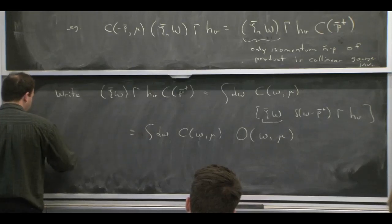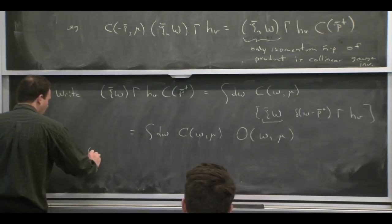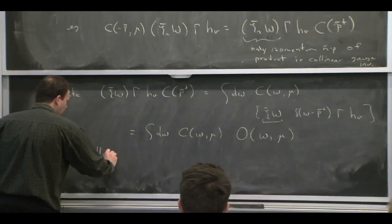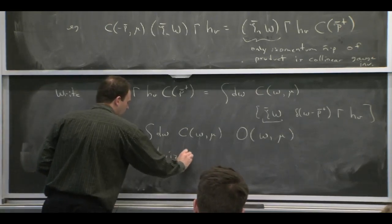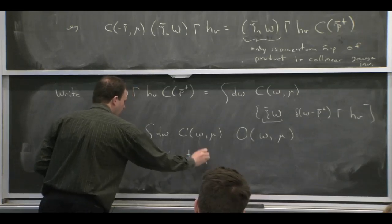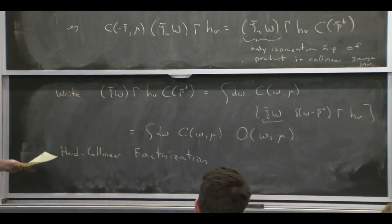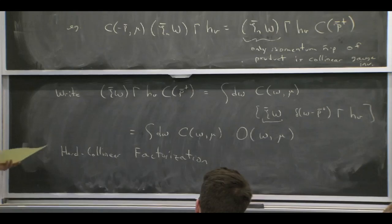So this here is what's called hard collinear factorization in the traditional QCD literature. Because it's telling you how hard degrees of freedom, which are encoded in our Wilson coefficients, can talk to collinear degrees of freedom, which are encoded in our operators.